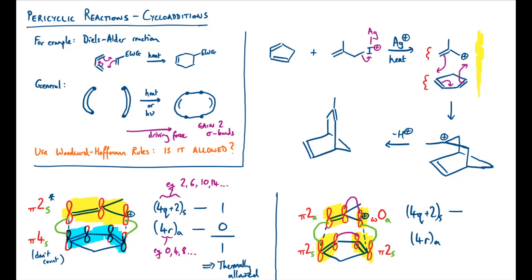So just counting, any of the two electron systems will go into this top one, and we've got two S type ones there, so we get number two. And looking at the 4r type components, it's our omega zero that contributes to this one, and we've got one of those which is an A, so we get the number one. Adding those together we get three, and because that's an odd number, we know that this is thermally allowed. That's reassuring that we get the same thing for both of these representations.